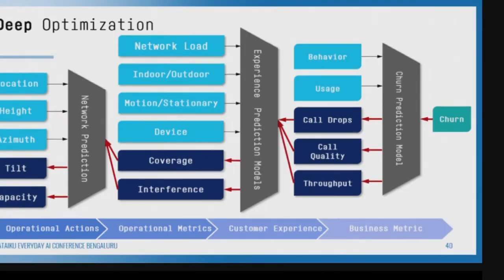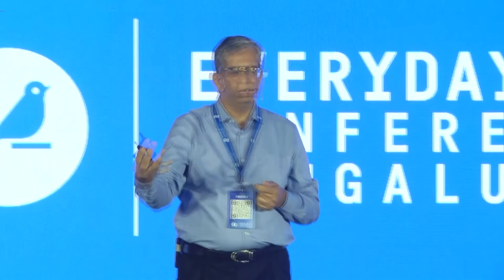Now we can do deep control — the arrows are pointing backwards. We are saying: I want to minimize churn — what should I do? That is the question. I don't want to predict churn, I want to minimize churn. Then I should increase call quality and minimize call drops — so the next model goes back. This is your new back propagation across models. You are doing reason code backward-forward and optimizing backward-forward.